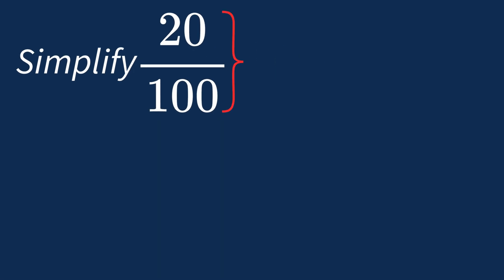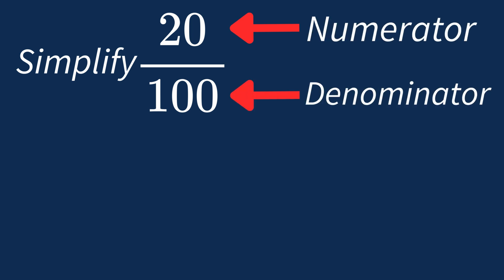To simplify 20 over 100, we need to look for the common factors between the top number, the numerator, and the bottom number, the denominator. First, let's list out the factors for each.